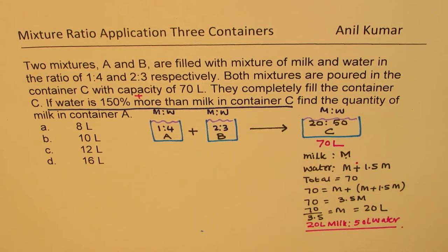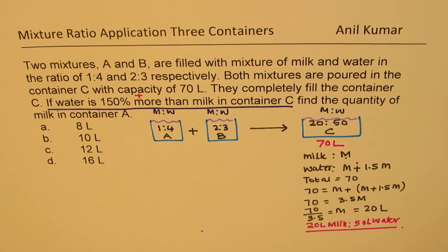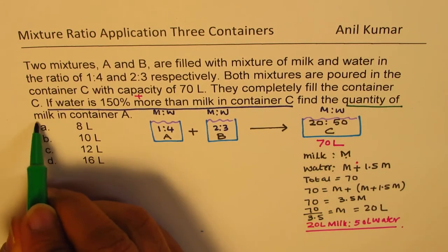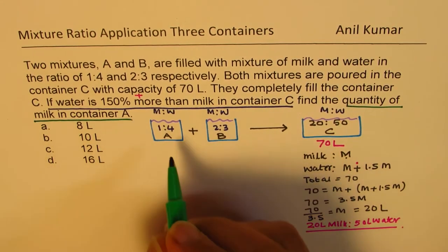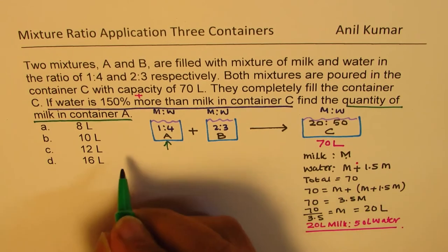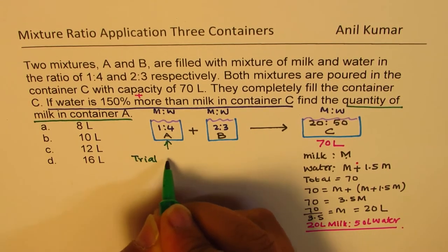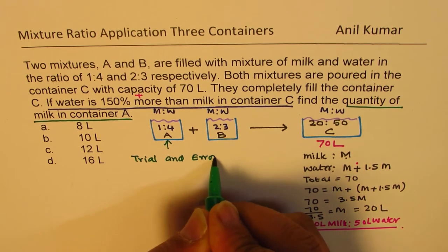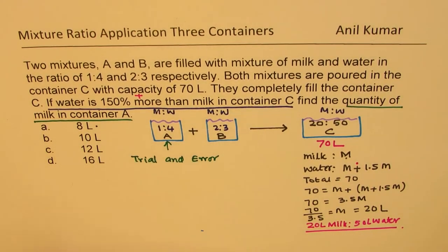Now the idea is to figure out the quantity of milk in A. We want how much milk is in A. This is what we want. So what we are going to do is we are now going to do trial and error.